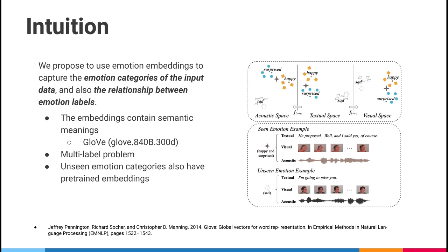Because emotion recognition is a multilabel problem in nature — as humans can have multiple emotions at the same time — measuring the relationship between emotion categories is quite important and very helpful to improve performance. For example, we can see a woman who is both happy and surprised. The vector representation of this data point is very close to both happy and surprised in the vector space. For unseen emotion categories not in the training set, because they also have pre-trained embeddings in the textual space, with our already learned mapping functions they can have emotion embeddings in all modalities, giving us some knowledge about the unseen emotions.